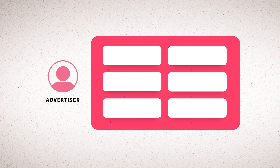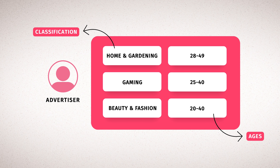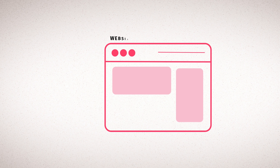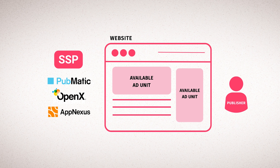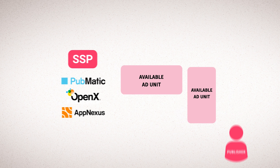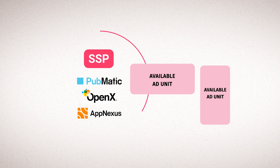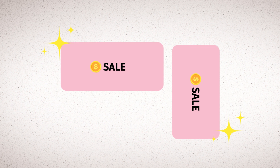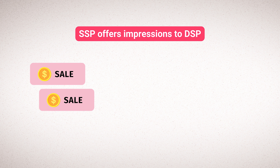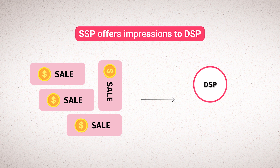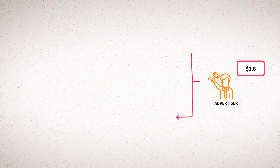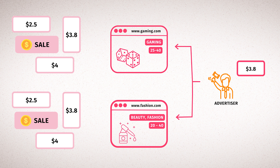The advertiser selects their target audience and uploads the ad that they want to publish. Publishers make their ad inventories available on the DSP through ad exchanges and supply side platforms. These platforms offer the ad impression to the DSP, which makes a decision to send a bid to buy the impression based on relevance to the targeting criteria.